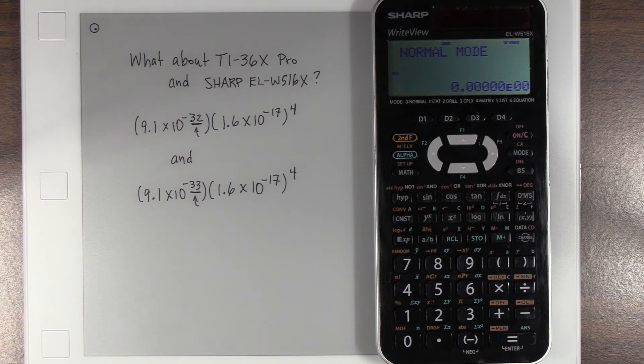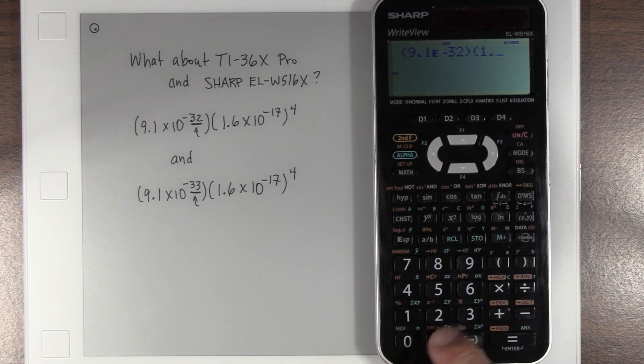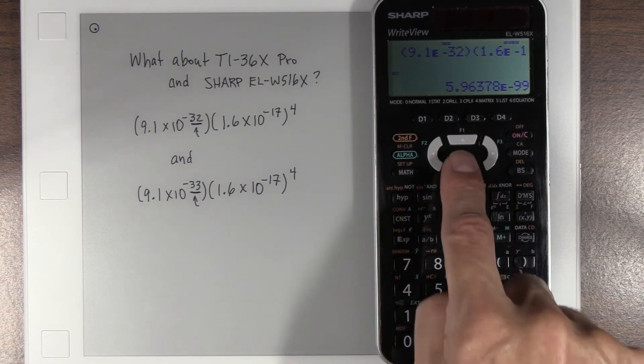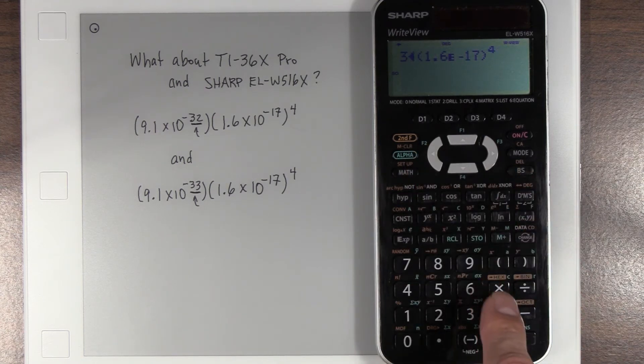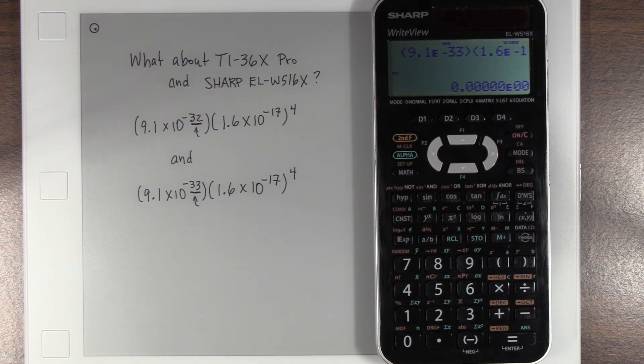All right, so now, this next one. Beautiful, get the right answer. To a 33 or a negative 33, and try it. And nope, zero.